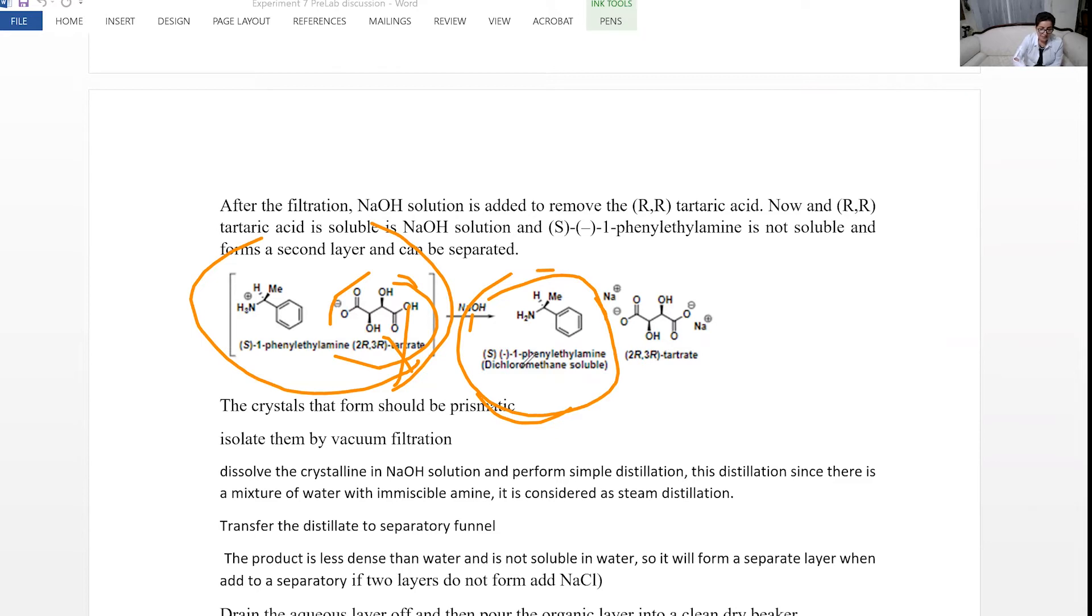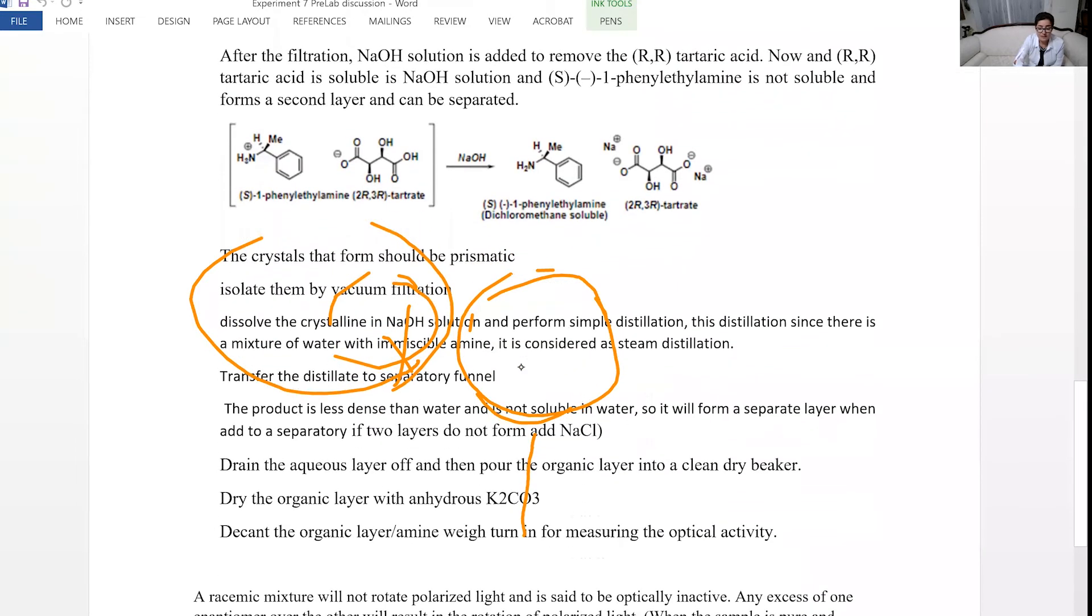I included some of the steps here, which says the prismatic crystals, those are the desired crystals, you want to isolate them by vacuum filtration, and you want to add sodium hydroxide to remove the tartaric acid. Tartaric acid is soluble in sodium hydroxide, but the phenylethylamine is not soluble in sodium hydroxide. So it shows like an oily layer of that compound.